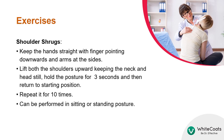For performing shoulder shrugs, keep the hands straight with fingers pointing downwards and arms at the sides. Both shoulders need to be lifted together, keeping the neck and head still. Hold this position for 3 seconds and then return to the starting position. Repeat the exercise 10 times.